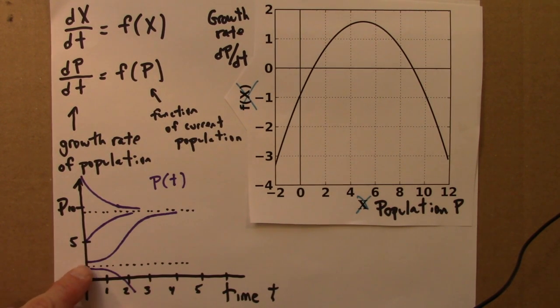So, we can see that solutions approach the stable fixed point at 9, and are pushed away from the unstable fixed point at 1. So, lastly, another type of graph that we can draw is the phase line for this.